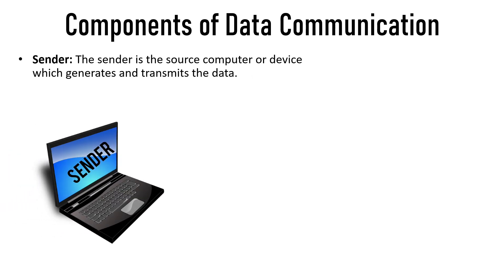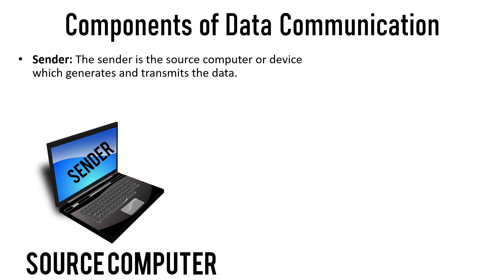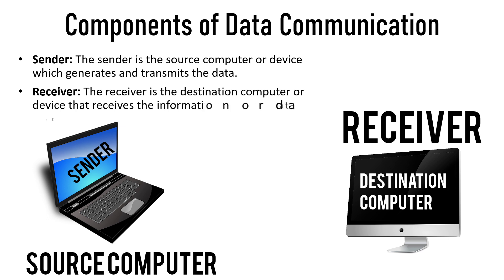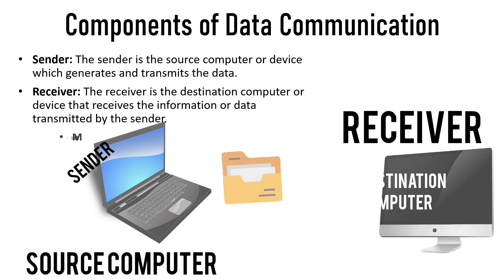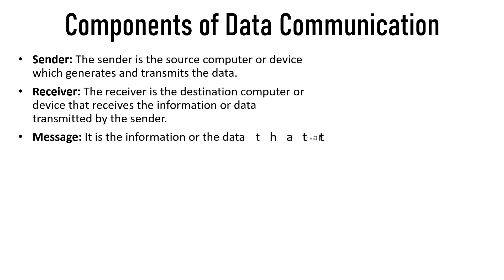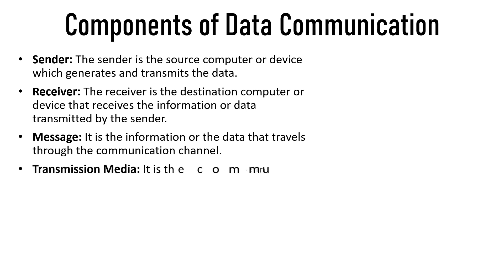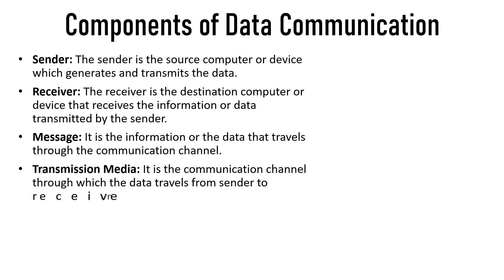The sender is the source computer or any device that generates the data and transfers it to another computer. Similarly, the receiver is the destination computer or device that receives the data and information transmitted by the sender. The message is the actual data or information that travels over the communication channel from sender to receiver.